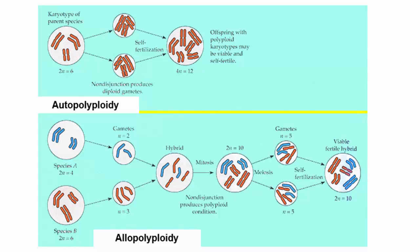Allopolyploidy means that two different species come together to form a third species — 'allo' meaning other. Gametes come together and produce a hybrid. During that hybrid's mitosis, nondisjunction produces polyploid cells, and then they produce diploid gametes — not haploid gametes anymore. They fertilize themselves and produce a fertile hybrid. Remember that there are two forms of polyploid speciation, autopolyploidy and allopolyploidy, and both require nondisjunction that produces a polyploid.